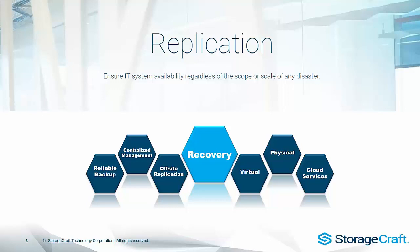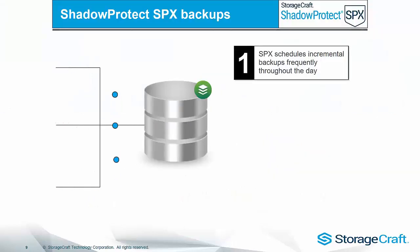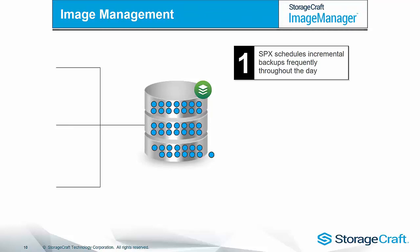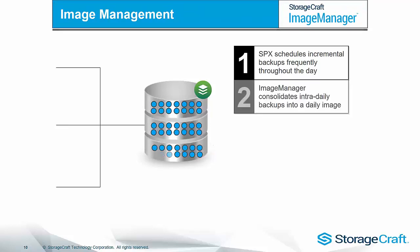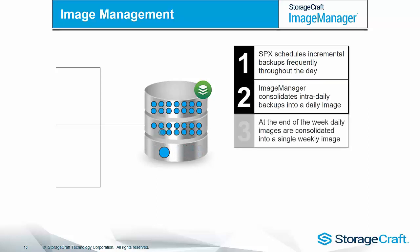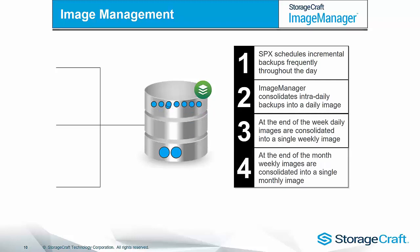Let's take a look at how the solution has been designed with replication in mind. It starts with ShadowProtect SPX, where we schedule continuous incremental backups frequently throughout the day — if your business requires, as frequent as every 15 minutes, 24/7. So this could total 96 backups every day and nearly 700 per week. As you can imagine, storage requirements will grow rapidly. Image Manager does the heavy lifting of managing all the backup images created by ShadowProtect SPX. It consolidates intra-daily backups into a daily image, daily images into a single weekly image, and weekly images into a single monthly image. Its primary objective is to allow you to set the desired retention policies to meet your business continuity management plan, freeing up valuable storage space and allowing your plan to move with you in time without worrying about RPO and RTO objectives or manually archiving or deleting backup images.